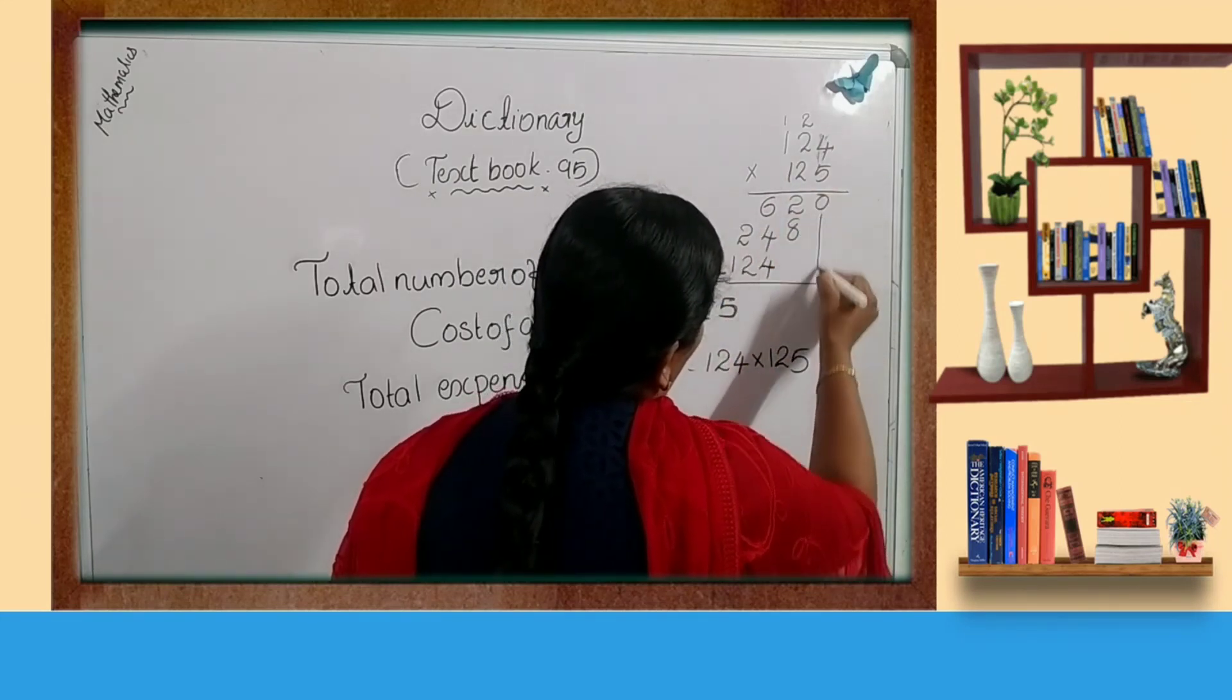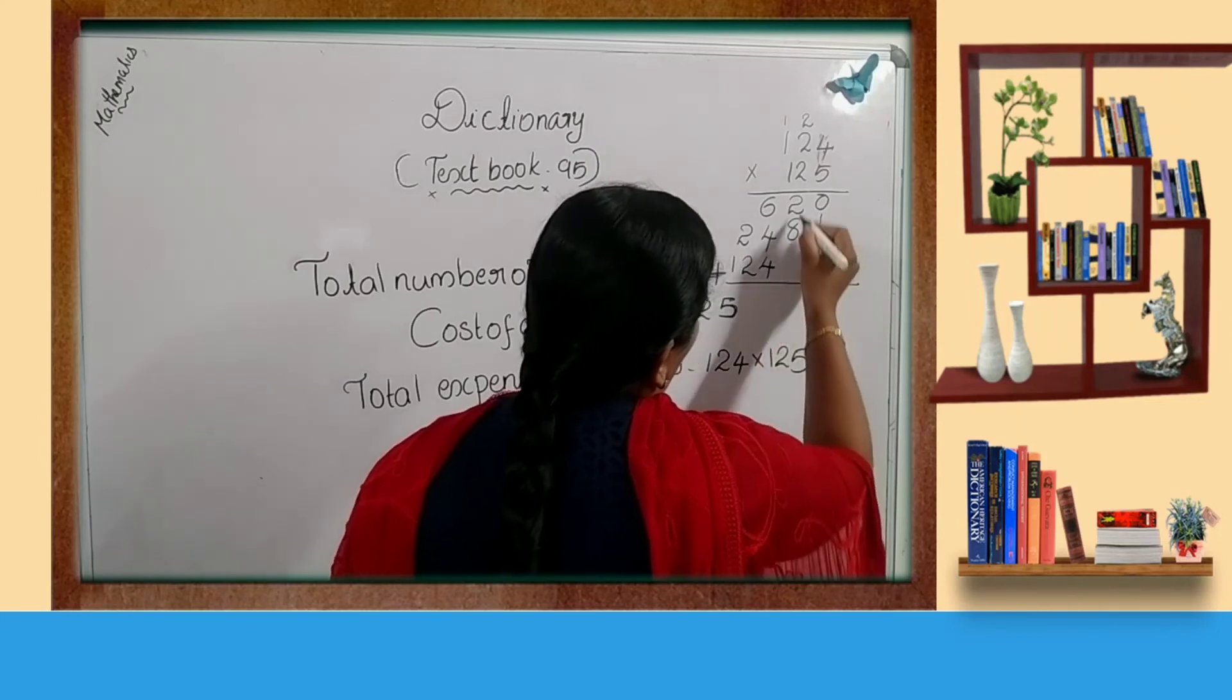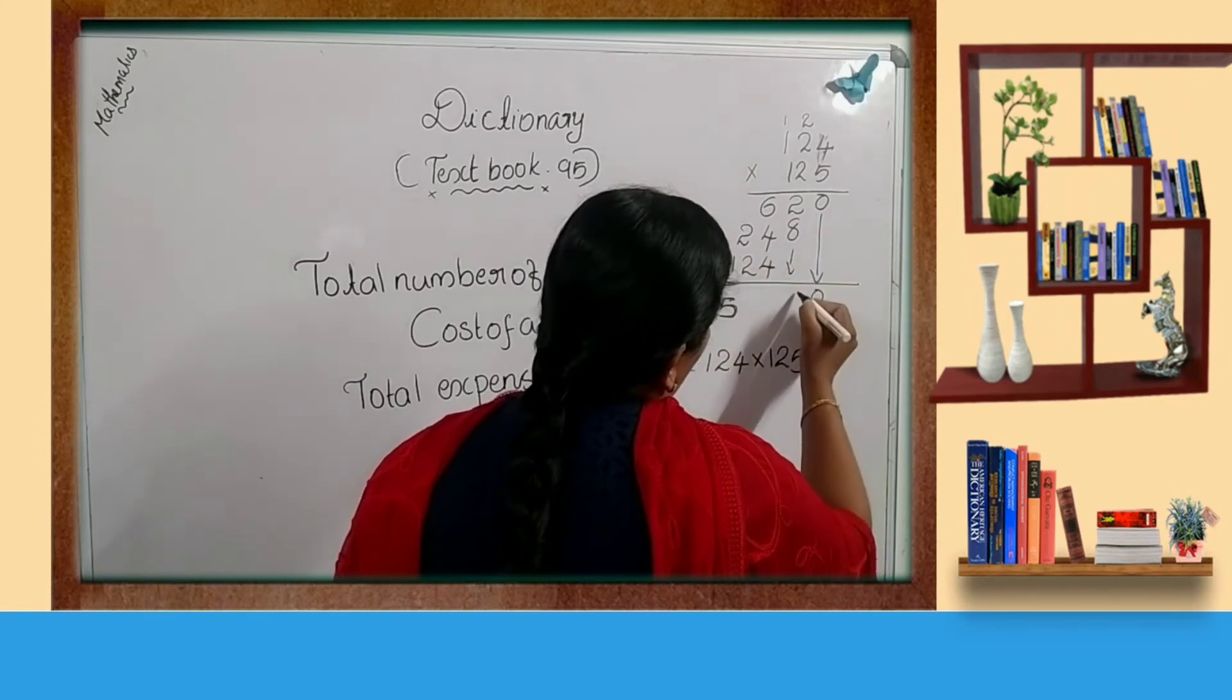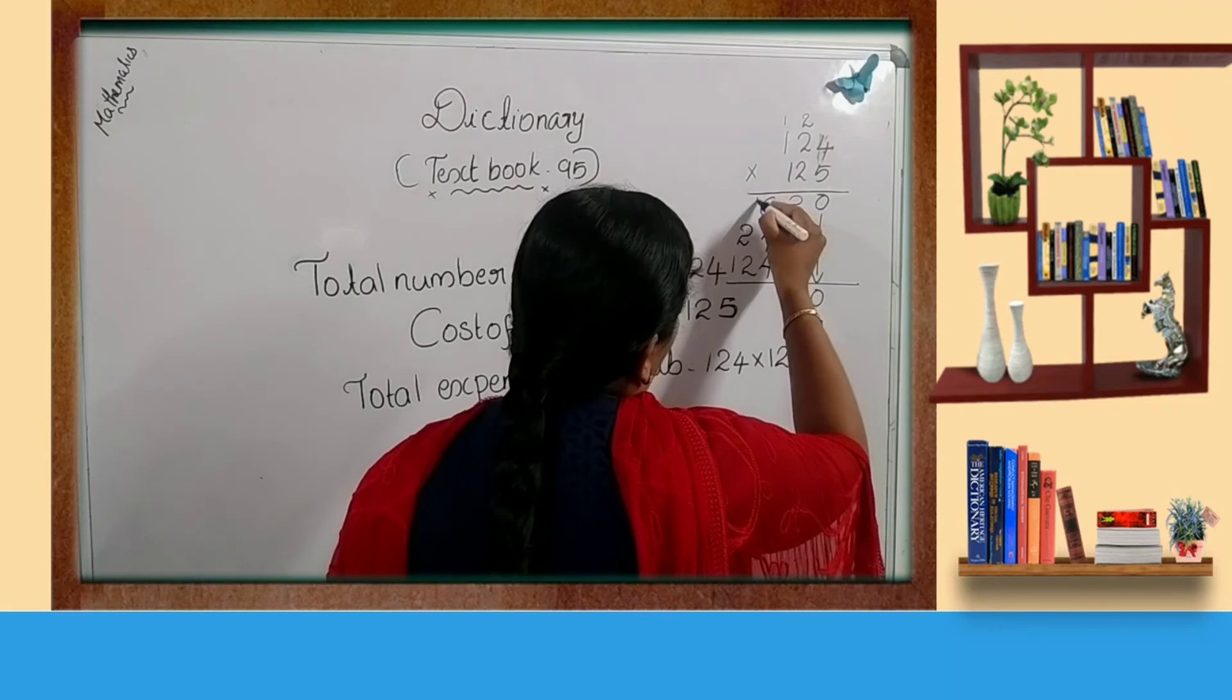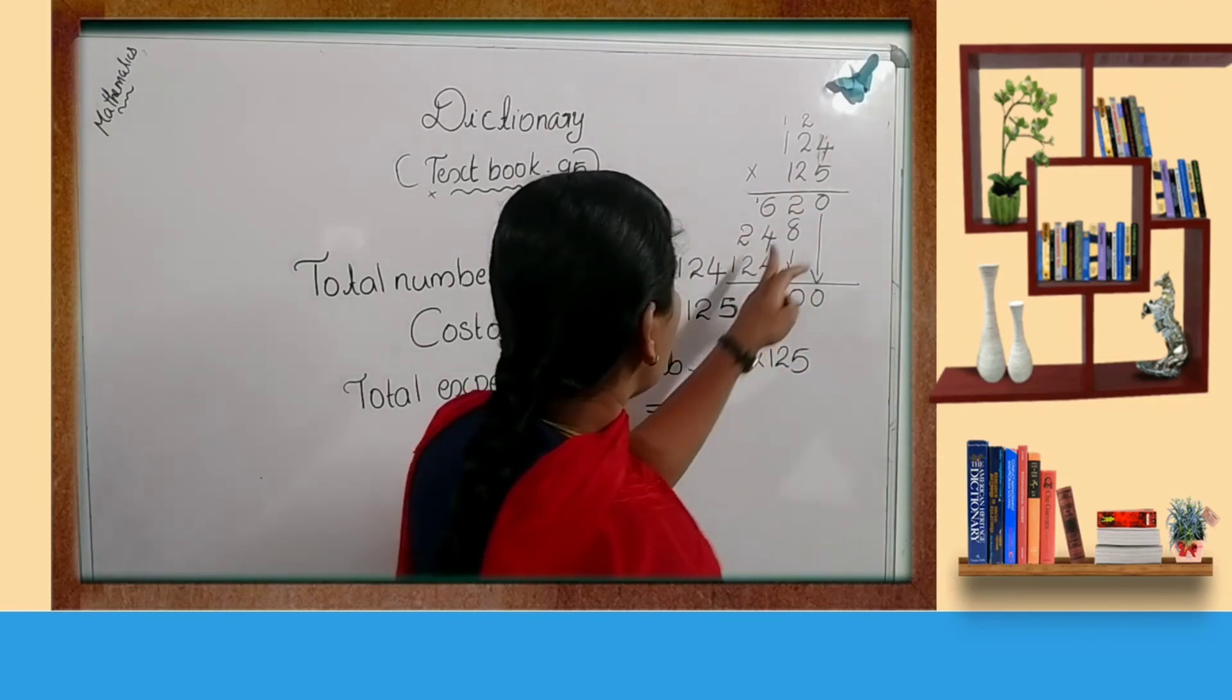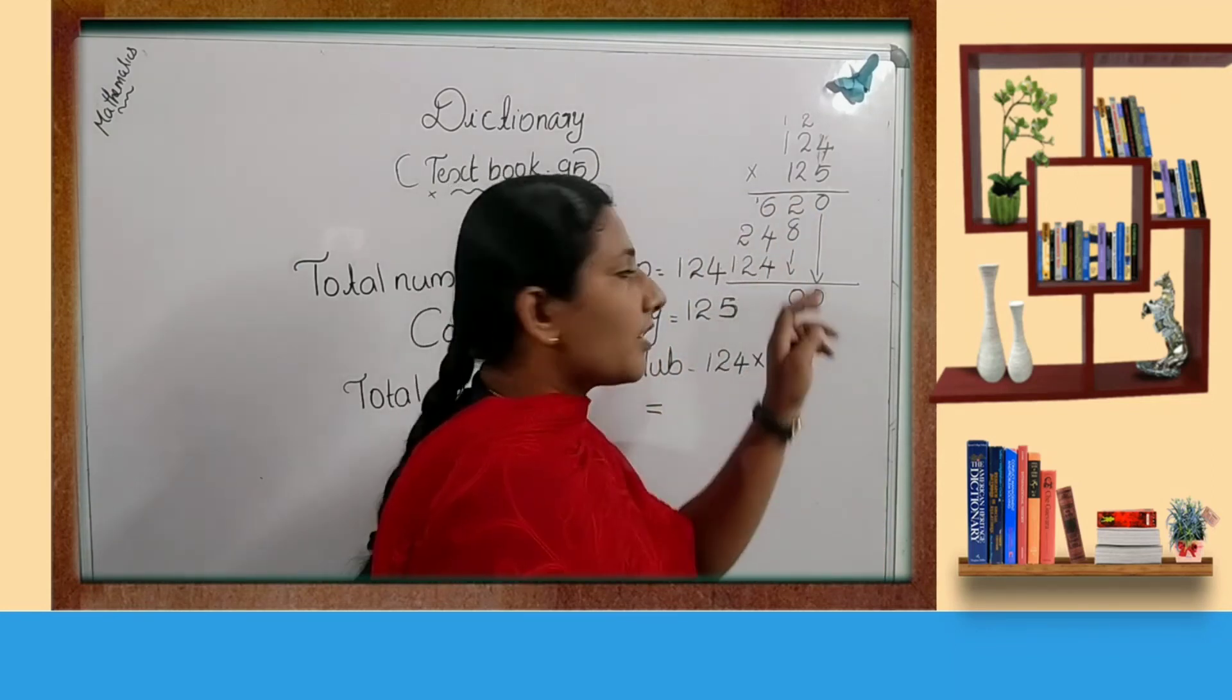Then add your numbers. So 0, 8 plus 2, that is 10. Carry over. 6 plus 4, 10. 10 plus 4, 14.